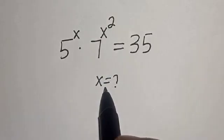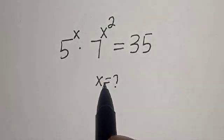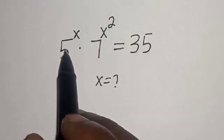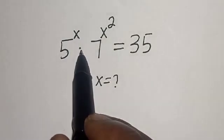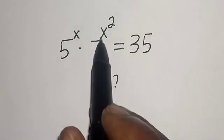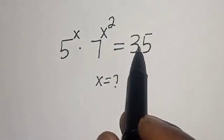Hello, welcome to MathJs. In this class, we want to find the value of x from this equation: 5 raised to the power of x, multiplied by 7 raised to the power of x squared, is equal to 35.